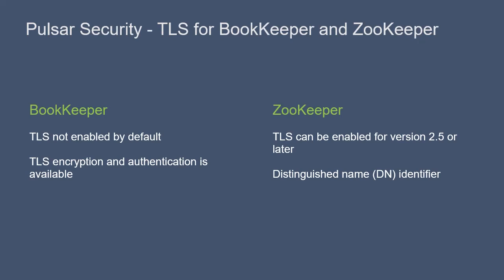Similarly, TLS can be enabled on ZooKeeper, as long as you're running version 2.5 or later. ZooKeeper uses an identifier called a distinguished name, or DN, that is used by every broker and command line interface tool. The same DN is used by all brokers and CLIs. The DN can be modified to customize what gets placed on the access control list.